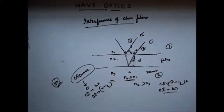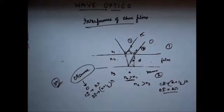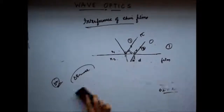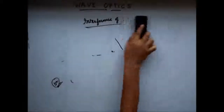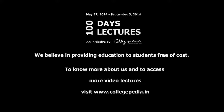This color variation is the result of interference due to thin films, not because of pigments present on the surface of the peacock's skin. Now let's move on to solve some problems on interference.